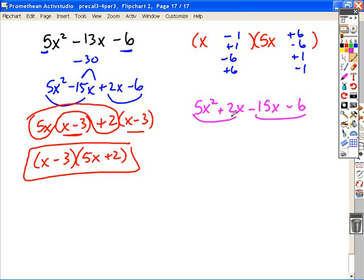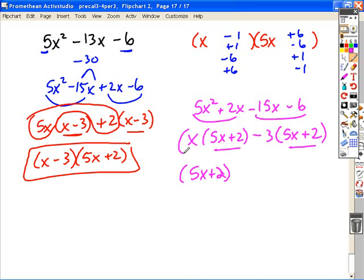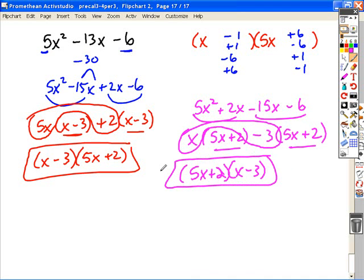Because now what common factor can we remove from the first pair? x leaves a 5x plus 2. From the second pair, a negative 3, leaving a 5x. Remember, you factor out the negative, so it changes the sign to plus 2. We have our common factor, and then the remaining terms, x minus 3.